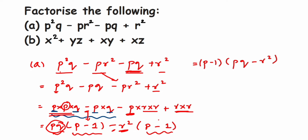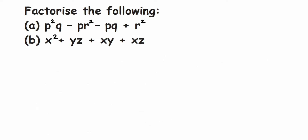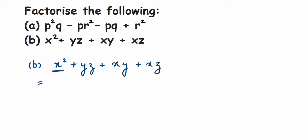That's the first question — I hope it's clear. Now we'll move on to the second one, which is a bit easier because we have all positive signs. The expression is x squared plus y z plus x y plus x z. I need to rearrange the terms again to take something common. I'll group x squared plus x y together, and y z plus x z together.